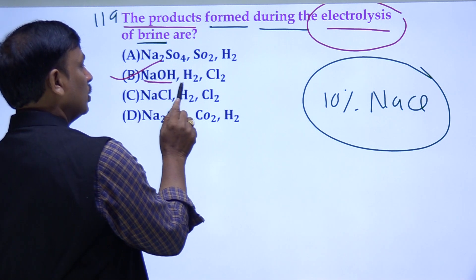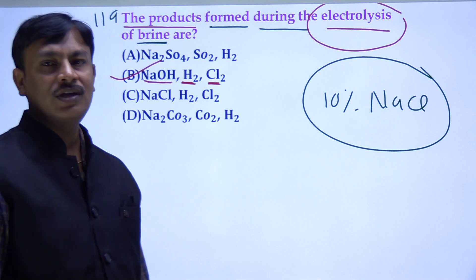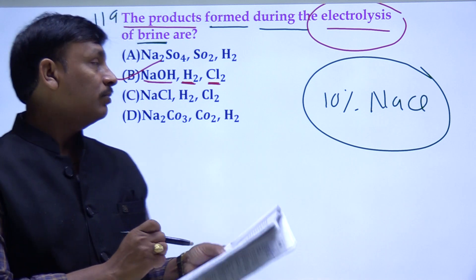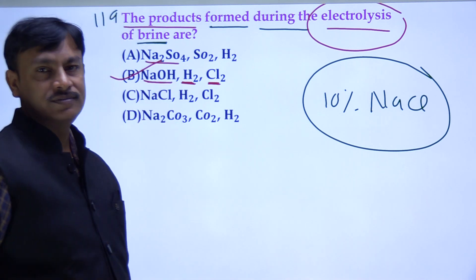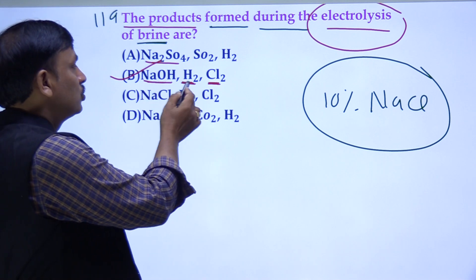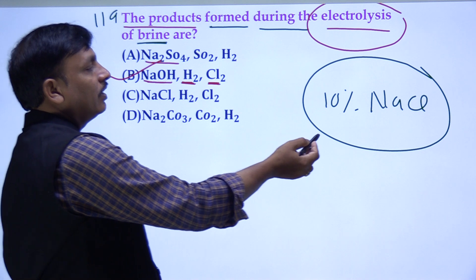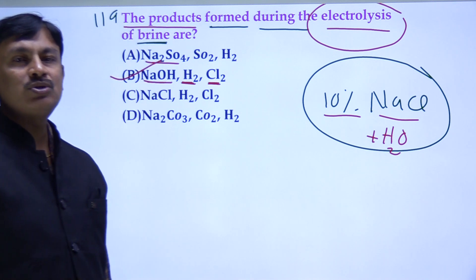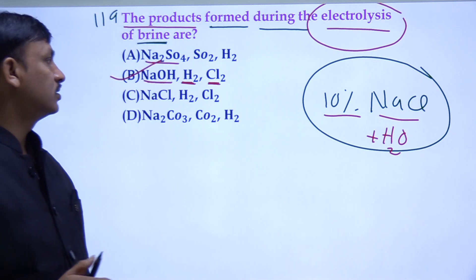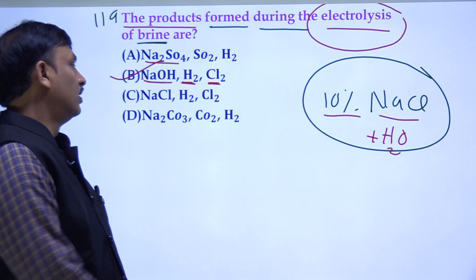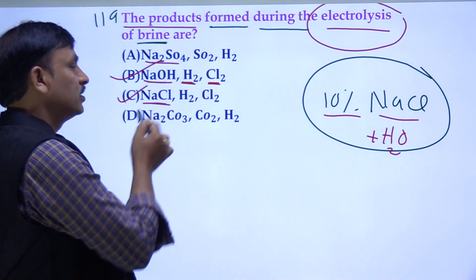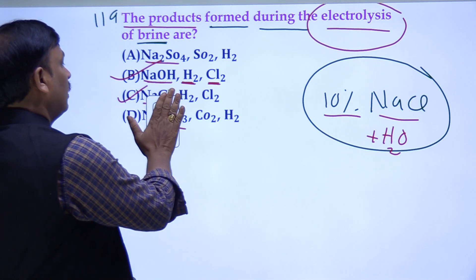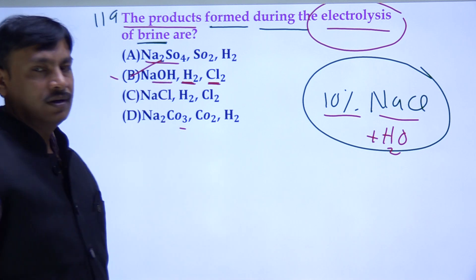The products from electrolysis of brine solution are: NaOH (hydroxyl), H₂, and Cl₂ (chlorine gas). The NaCl solution gives H₂. When there is dilute solution, it is 90% water, and you get Cl₂. So the answer is B — NaOH, H₂, Cl₂.